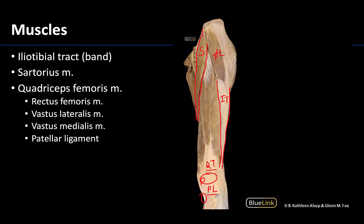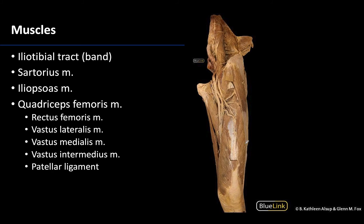Now let's differentiate the parts of the quadriceps muscle. Running right down the middle is the rectus femoris, and on either side are the two vasti muscles. Laterally you have the vastus lateralis, and medially the vastus medialis. The fourth part of the quadriceps - the vastus intermedius - is deep to the rectus femoris, so we cannot see it in the superficial dissection. In this deeper dissection, with the rectus femoris and the sartorius cut, the vastus intermedius becomes visible.